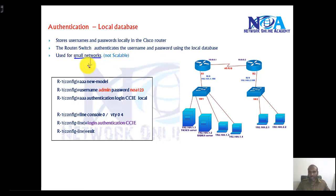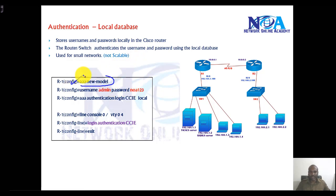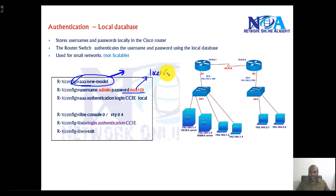If you have a very small network with a very small number of devices — like five to six — we can still go with the local database. To configure local database authentication, we first have to enable the AAA process, which is disabled by default. The command 'aaa new-model' enables the AAA process, and then we configure one local user account so that when a user tries to log in via Telnet, there is a valid account to check against.